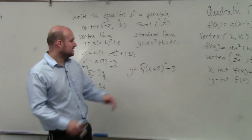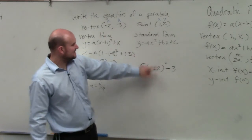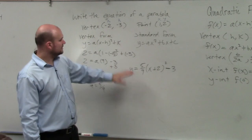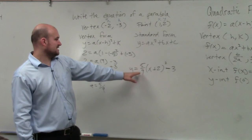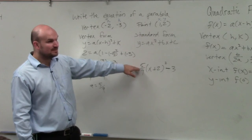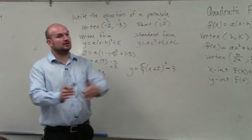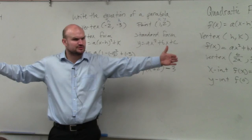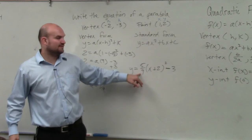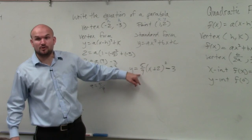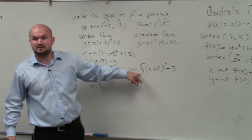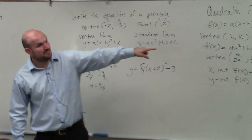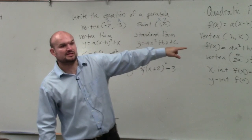Now let's verify. We know the vertex — does this equation give us the correct vertex? Yes. And a equals 5 ninths, which is less than 1, so that would be a vertical compression. Is the graph still opening up or down? It's opening up because a is still positive, so the end behavior would be written just like that.